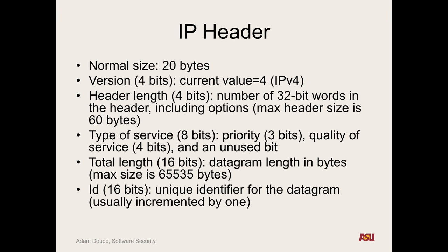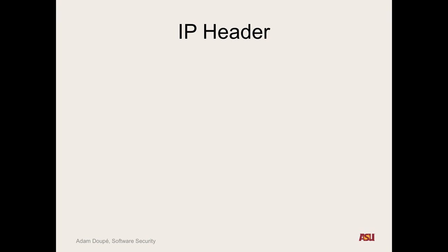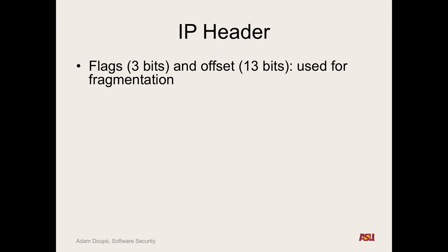I think we'll look at that, because that's actually an important thing. So the flags and the offsets are used for fragmentation — if this packet's been fragmented, what offset it goes on.